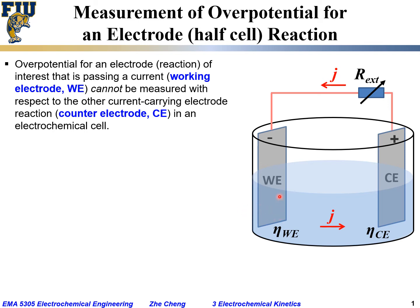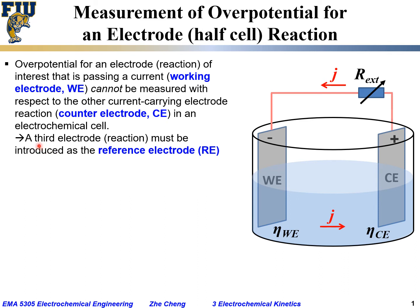To solve this dilemma and measure the overpotential for a single electrode, people use a third electrode — called the reference electrode. So instead of only two electrodes, we add a third electrode inserted into the solution. Then, instead of measuring the voltage between the working electrode and the counter electrode, we measure the voltage difference between the working electrode and this reference electrode.